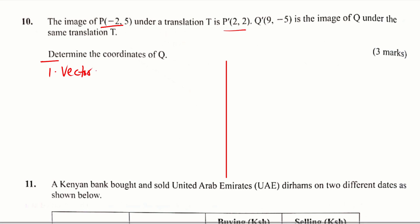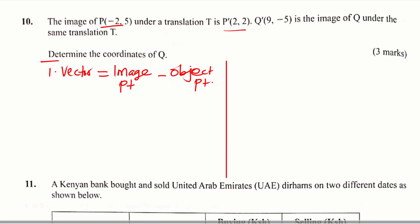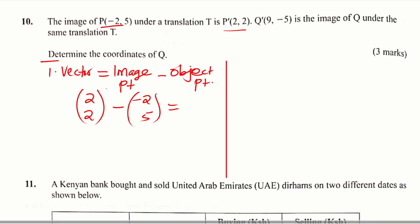The translation vector is obtained by taking the image point, subtract the object point. So in this case, the image point is P'. When you are doing this calculation, we use the column vector. So P' 2, 2 — we're going to write it like this. That is the image of P, subtract the object point. The object point is P, negative 2, 5. And when you subtract these, you get 2 subtract negative 2, you get 4. Then 2 subtract 5, you get negative 3.